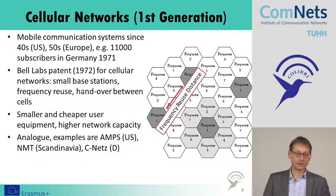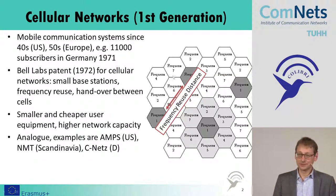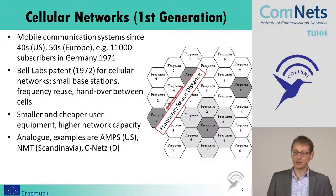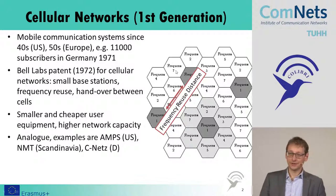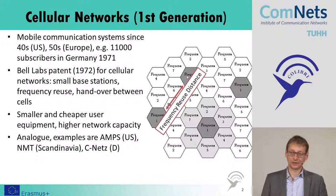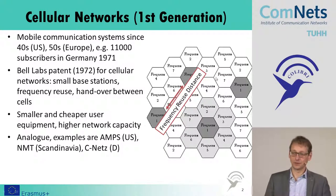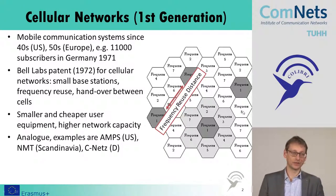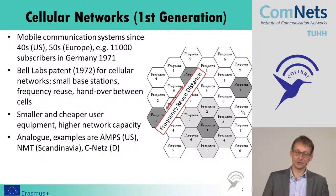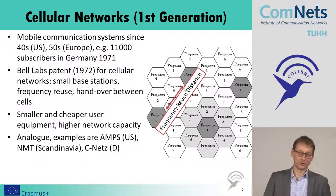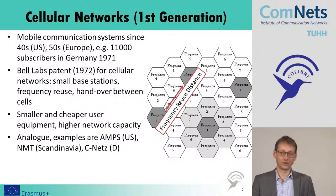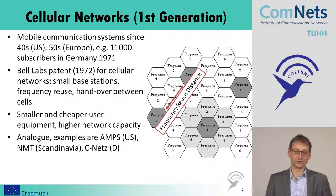The idea of the cellular network we see in this picture on the right: we have different frequencies and we reuse the frequency after some distance. We have one frequency, we have other frequencies around it in neighboring cells, and we reuse this after something like one, two, or three cells. This we call the frequency reuse distance.